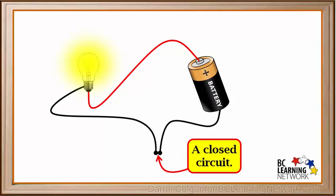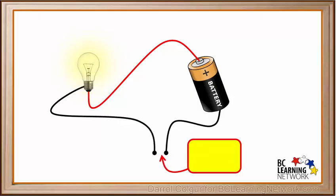But when we touch the wires together, there's a closed circuit and the light bulb lights up. And when we disconnect the wires again, the light bulb goes off.